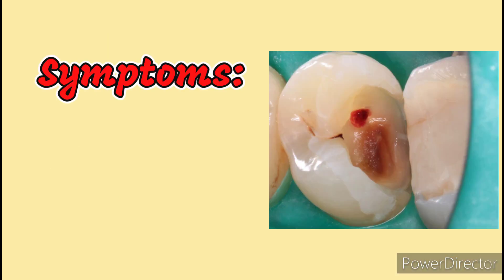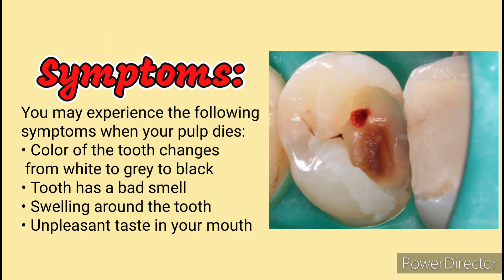Symptoms: when your pulp dies, you may experience the following — the color of the tooth changes from white to gray to black, the tooth has a bad smell, swelling around the tooth, and an unpleasant taste in your mouth.